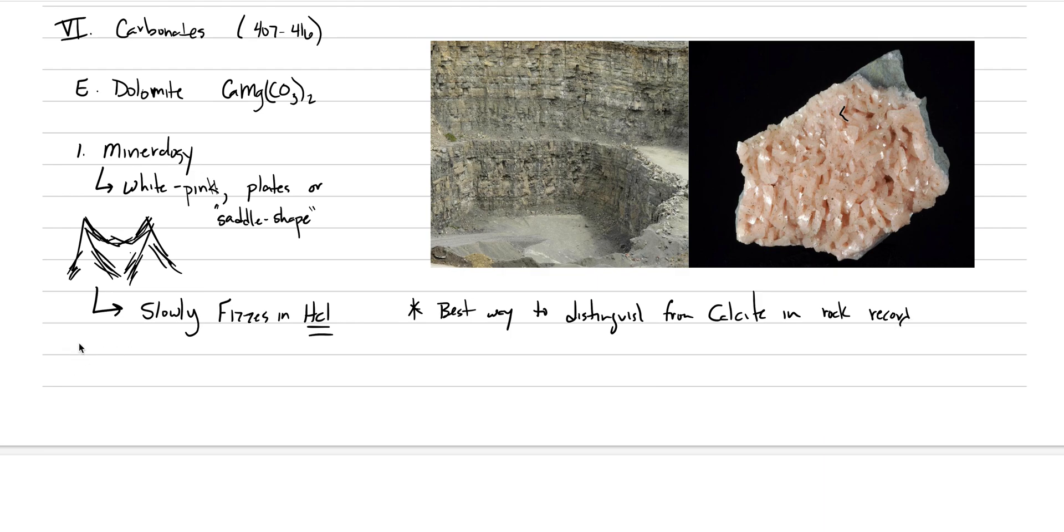A geologist will encounter dolomite very often because of the process of dolomitization. Dolomitization is very common in sedimentary sequences with limestone, and it's a replacement of calcium with magnesium. It's a diagenetic process that occurs in a sedimentary sequence and changes it, almost like metamorphism, but the rock is still sedimentary.